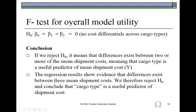The test of the overall model utility uses the F statistic and its corresponding p-value. Unlike in standard multiple regression, B0 is included in the statement of the null hypothesis in dummy variable regression. The null hypothesis states that there are no cost differentials across the three cargo types: durable, semi-fragile, and fragile.